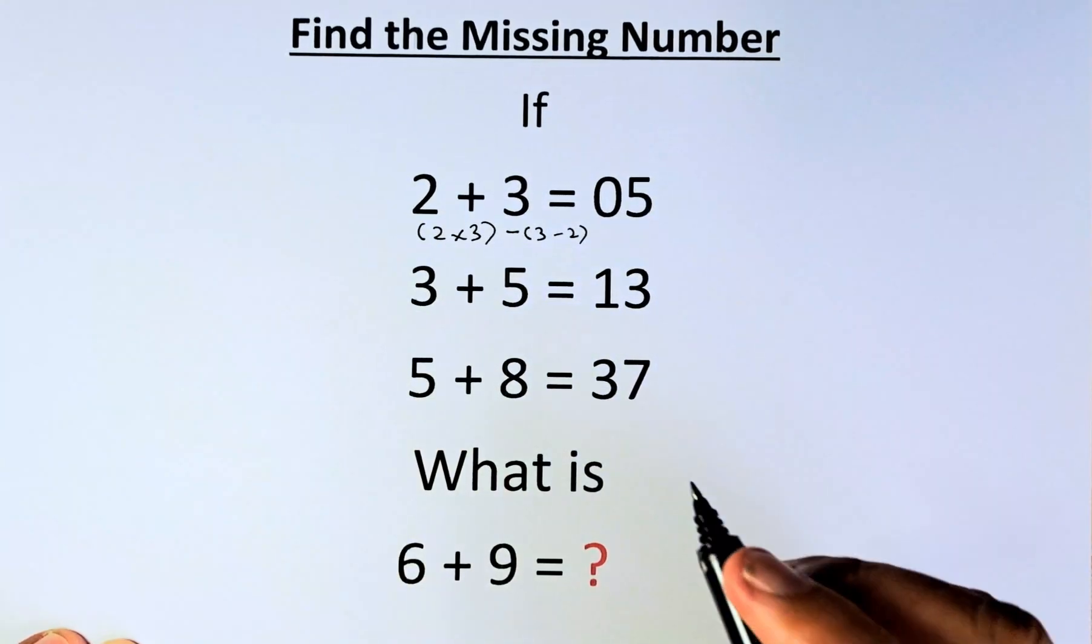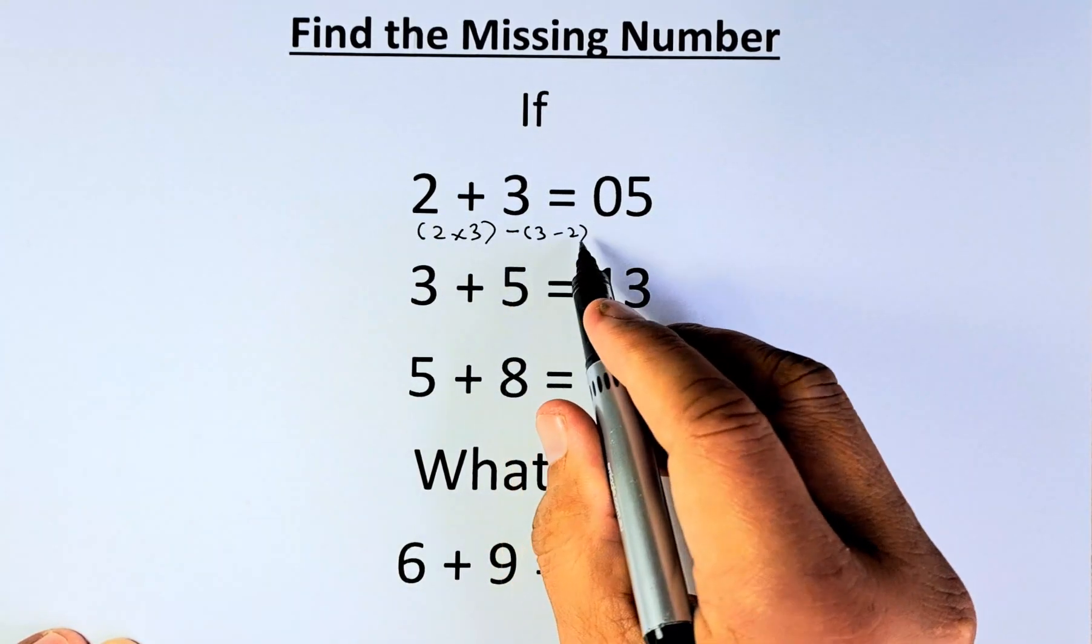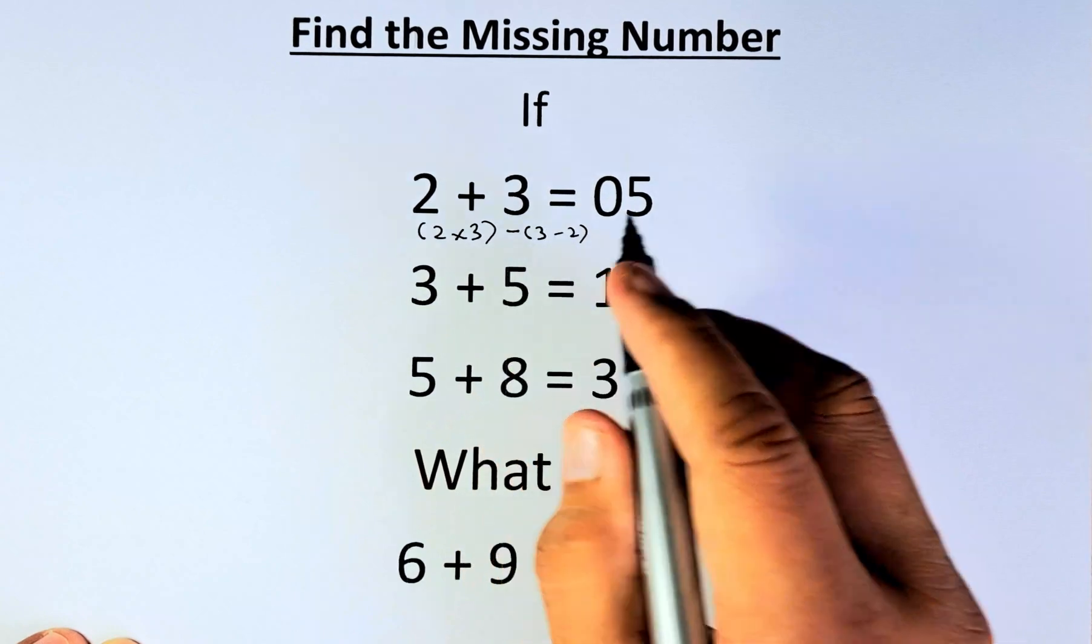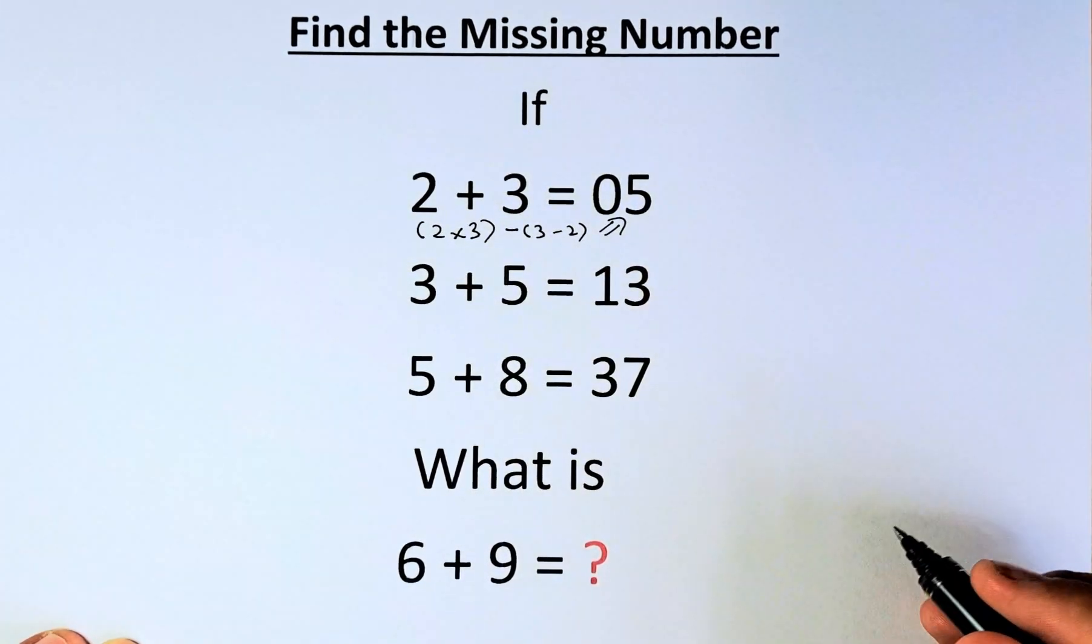So 2 times 3 is 6, 3 minus 2 is 1, so 6 minus 1, and the answer is equal to 5. Similarly,